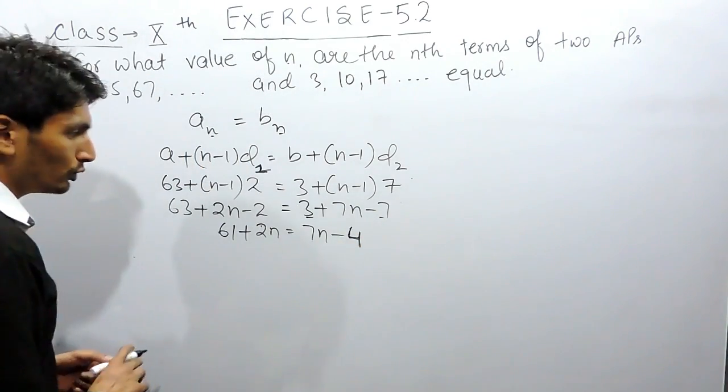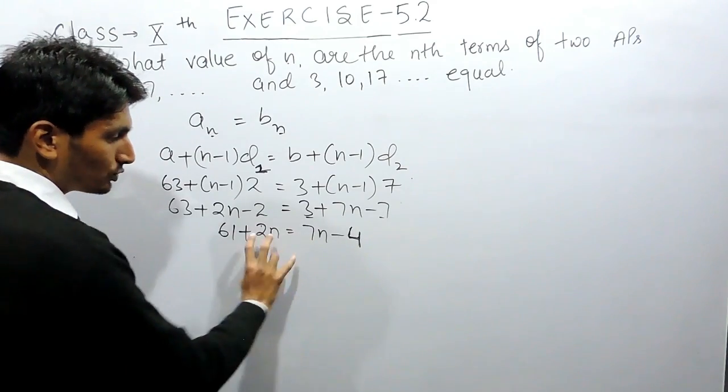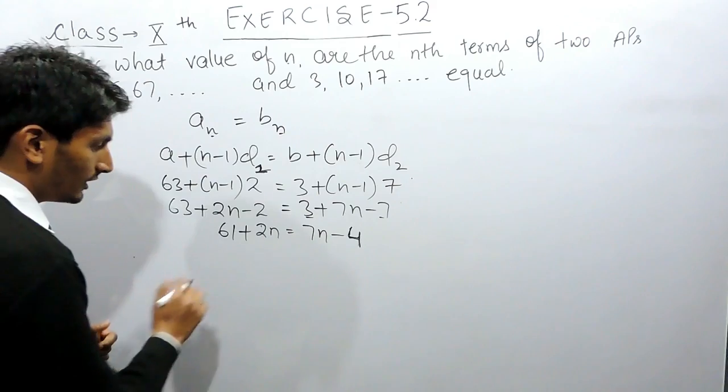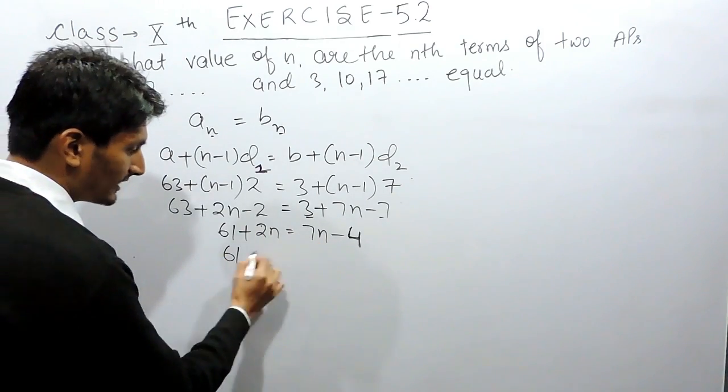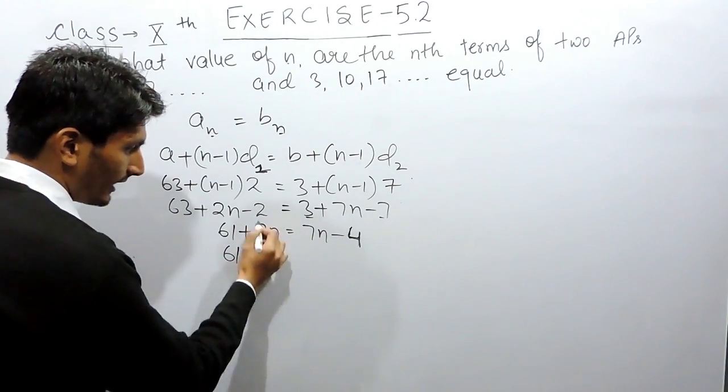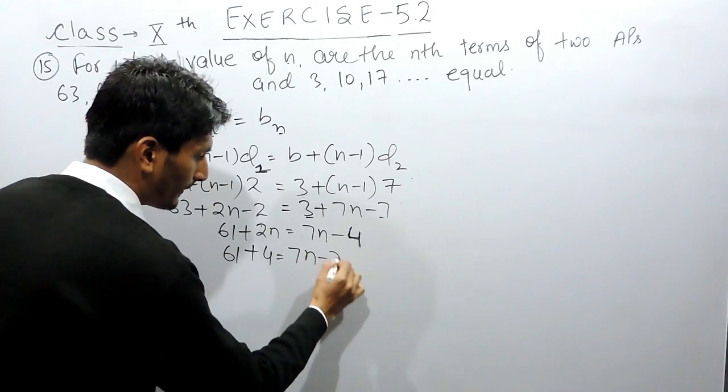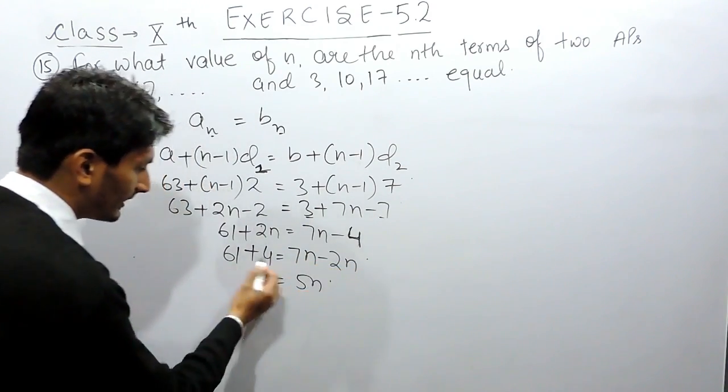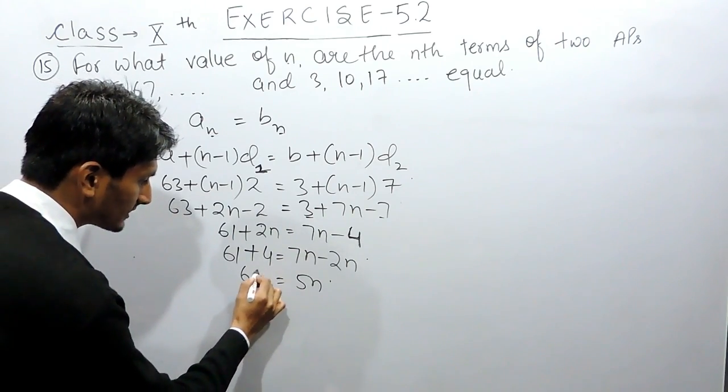I can shift this to this side and shift this constant to this side. 61 minus value will be plus and this 2 value will be minus. So 7 minus 2 is 5n and 61 plus 4 is 65.